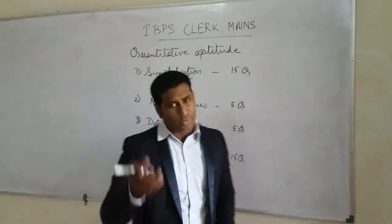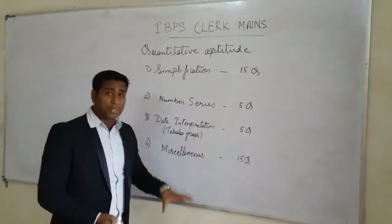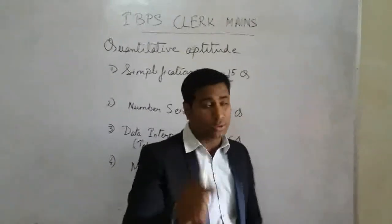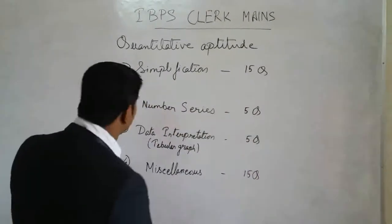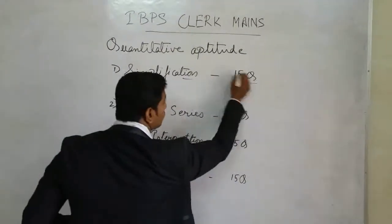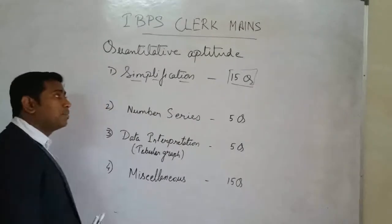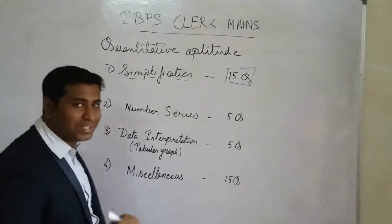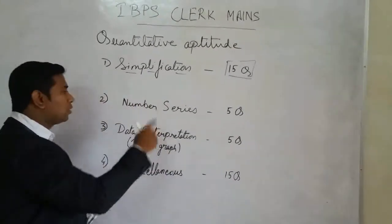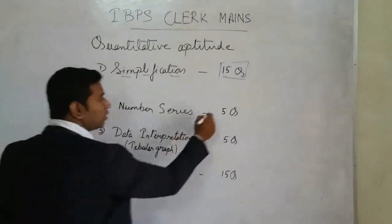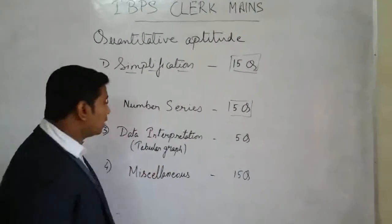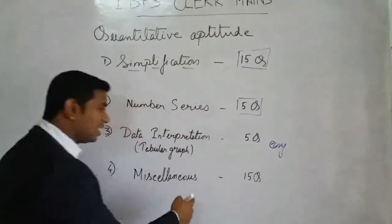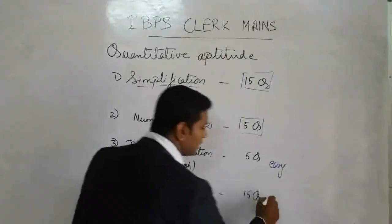Here we have our strategy and the topics they are going to cover in quantitative aptitude. For simplification, there are 15 questions — a very good number and a very simple, easy topic, so you should not miss simplifications. For number series, there are 5 questions, again very simple. For data interpretation, they are asking 5 questions, also very easy.